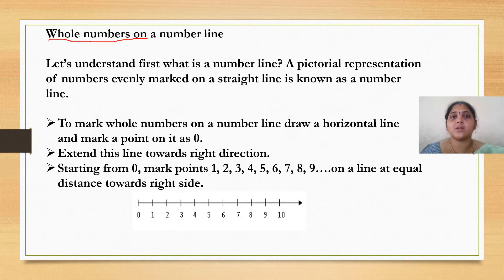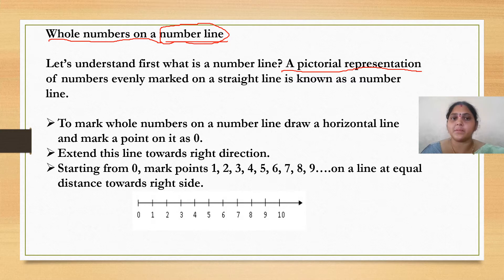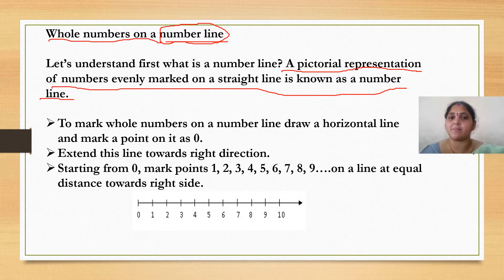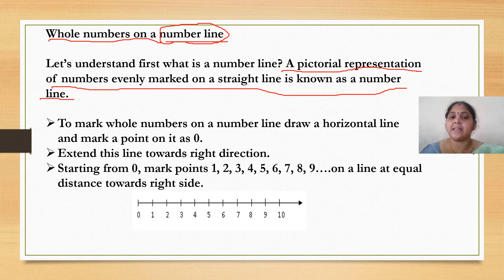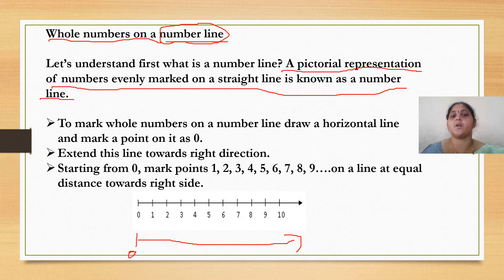Now we will see how whole numbers on a number line are represented. First we have to understand what is meant by number line. A number line is a pictorial representation of numbers evenly marked on a straight line. To mark whole numbers on a number line, draw a horizontal line and mark a point on it as 0. Extend this line towards the right direction. Starting from 0, mark points 1, 2, 3, 4 and so on at equal distance towards the right side.